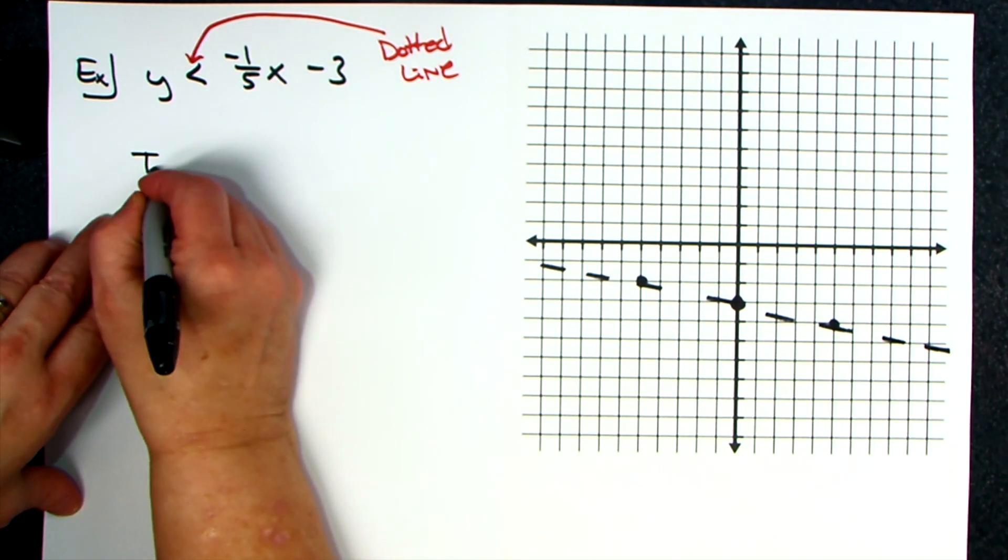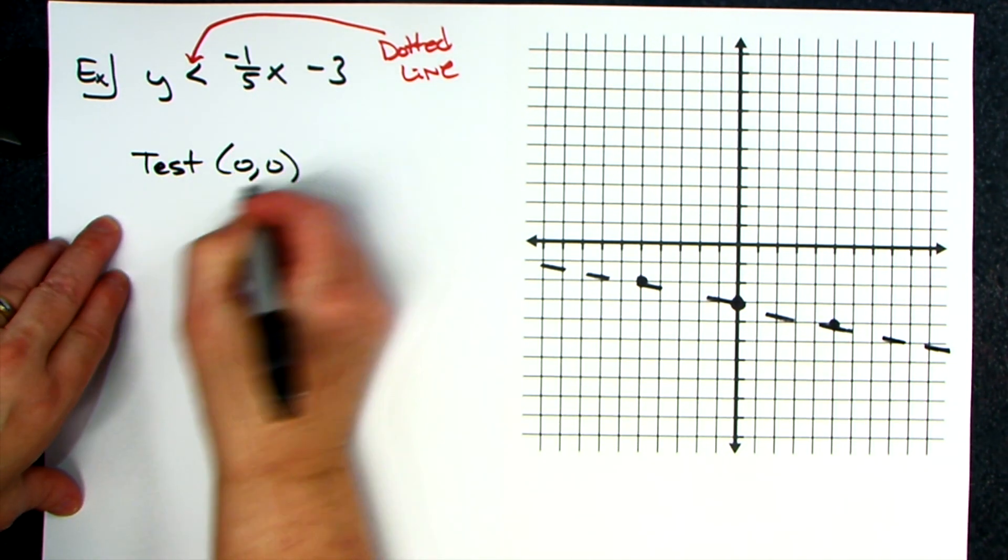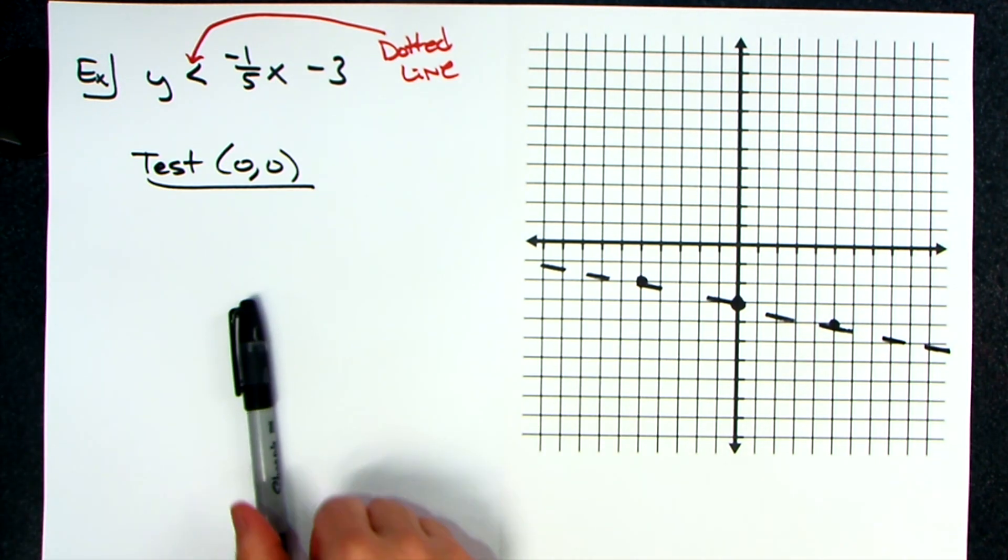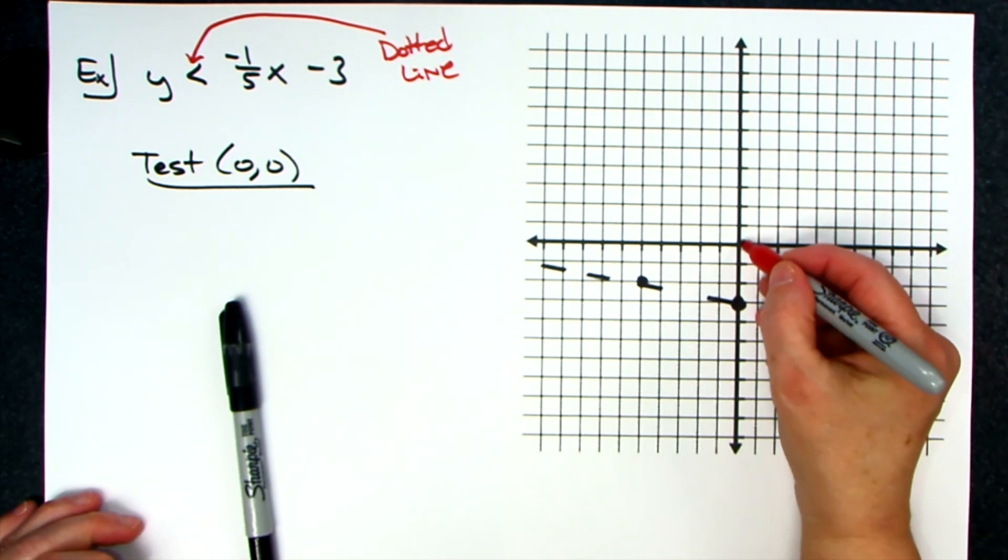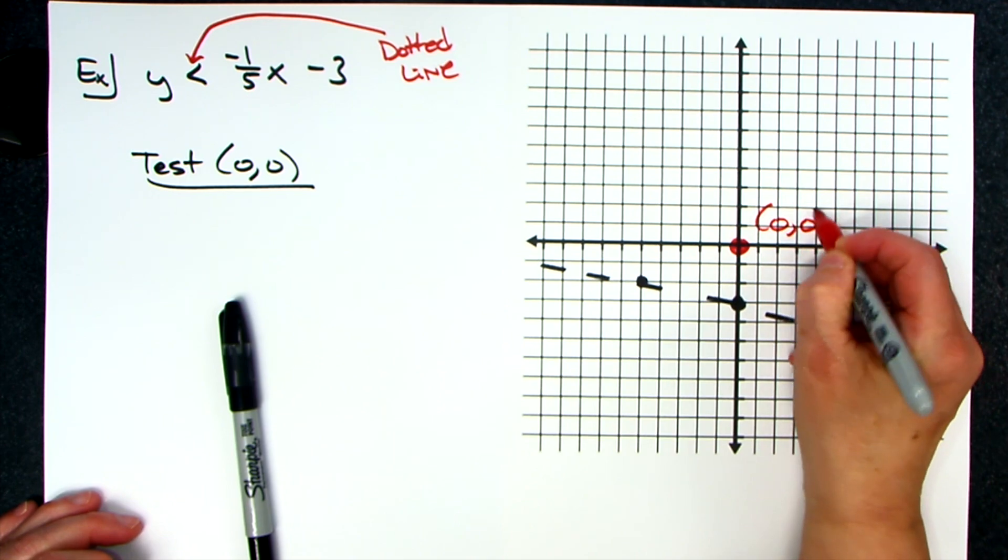And then we're going to test that zero zero point. Okay, so identifying where it is - it's the origin again. Do you have to test zero zero? No, I could test any point.